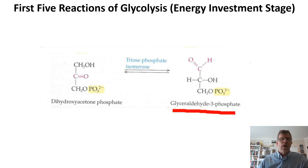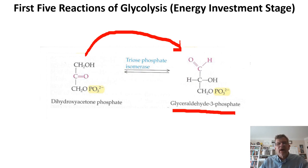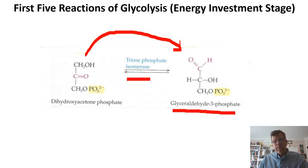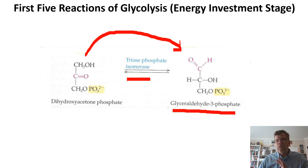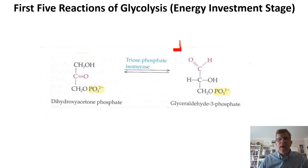In order for the process to continue in parallel, both three-carbon fragments must proceed as glyceraldehyde-3-phosphate. So the final reaction of the energy investment stage converts dihydroxyacetone phosphate into glyceraldehyde-3-phosphate — these are constitutional isomers, mediated by an isomerase enzyme. At the end of the first five reactions of glycolysis, we have burned two ATP for one glucose molecule, and we now have two molecules of glyceraldehyde-3-phosphate.